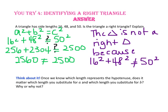Once we know which length represents the hypotenuse, does it really matter which length you substitute for a and which length you substitute for b? No. Since a squared plus b squared is the same as b squared plus a squared, the numbers you substitute for a and b do not matter.